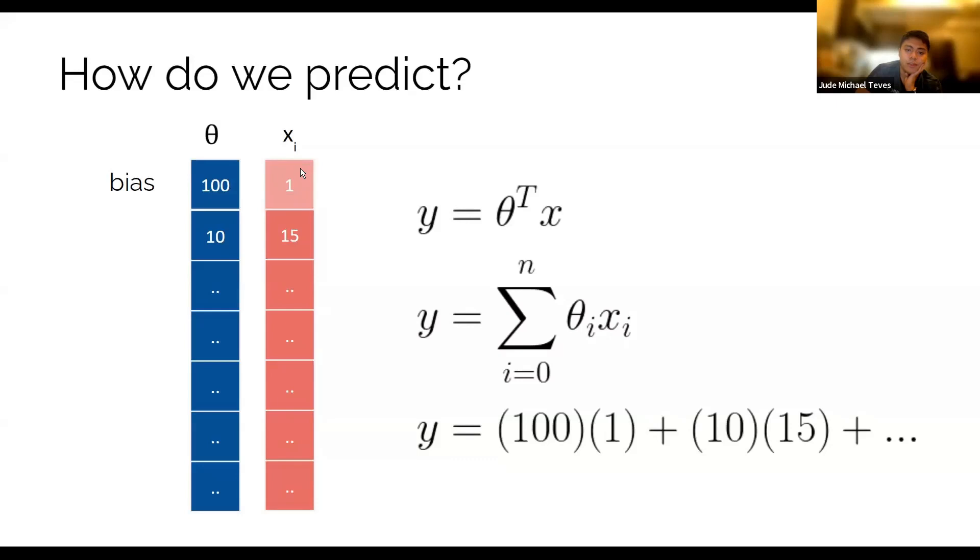In this case, it's 1. 1 is always the value for the bias. This is the bias rule, right? If you remember earlier, the 15 or whatever value. It's just an example.